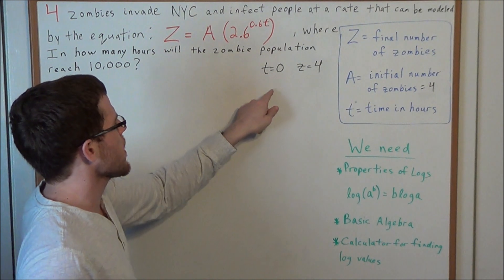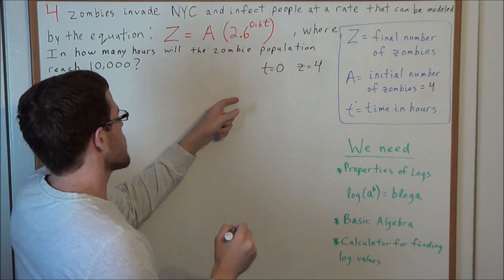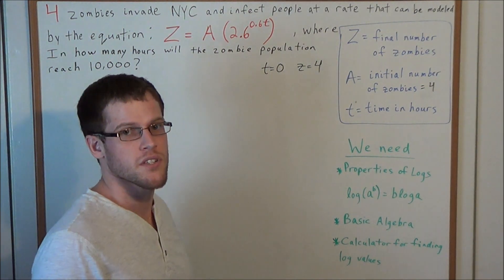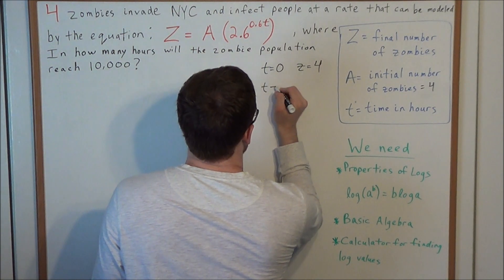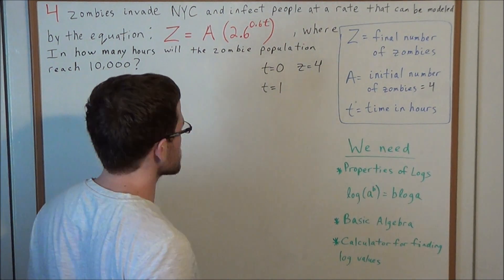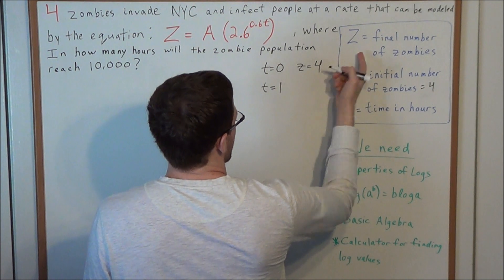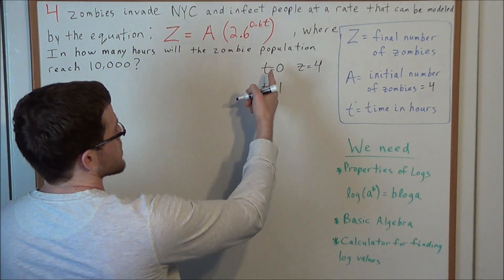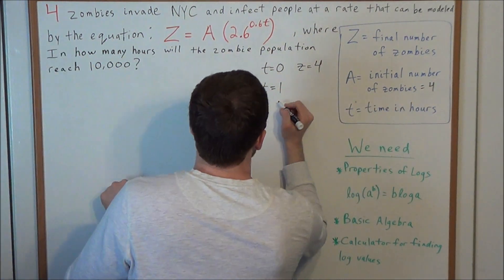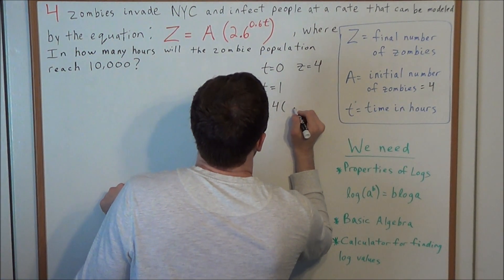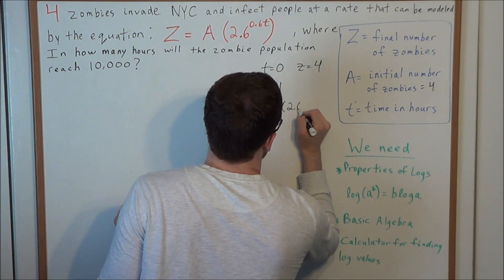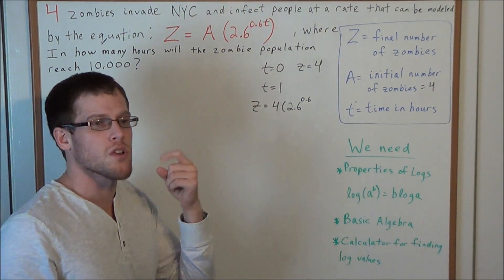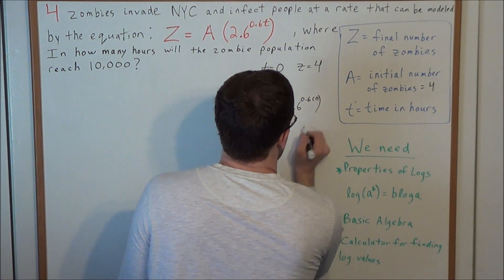We can quickly check that these values satisfy the equation. Let's look at time equals 1, since there are four zombies at the start. So at time equals 1, the total number of zombies z equals a — which is four — times 2.6 to the 0.6 times t, and t here is one hour.